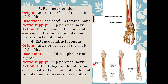The fourth muscle is extensor hallucis longus. Extensor means extension, hallux means big toe, and longus means it is a long muscle. It originates from the anterior surface of the shaft of the fibula and is inserted over the base of the distal phalanx of the big toe — there are two phalanges in the big toe, proximal and distal. It is innervated by the deep peroneal nerve. Its actions are extension of the big toe, dorsiflexion of the foot, and inversion at the subtalar and transverse tarsal joints, because it is inserted on the medial side.